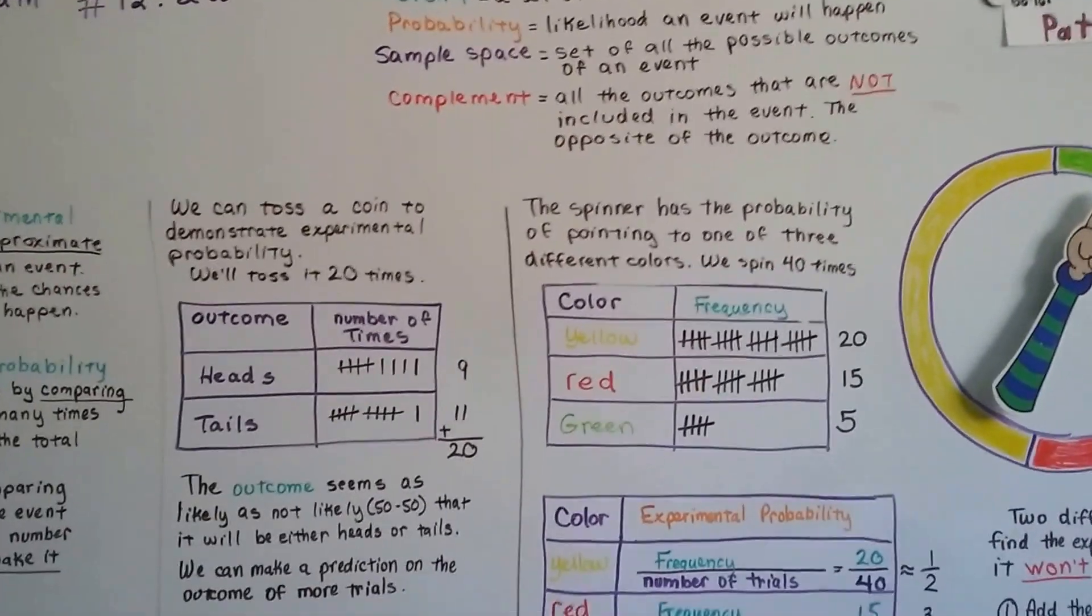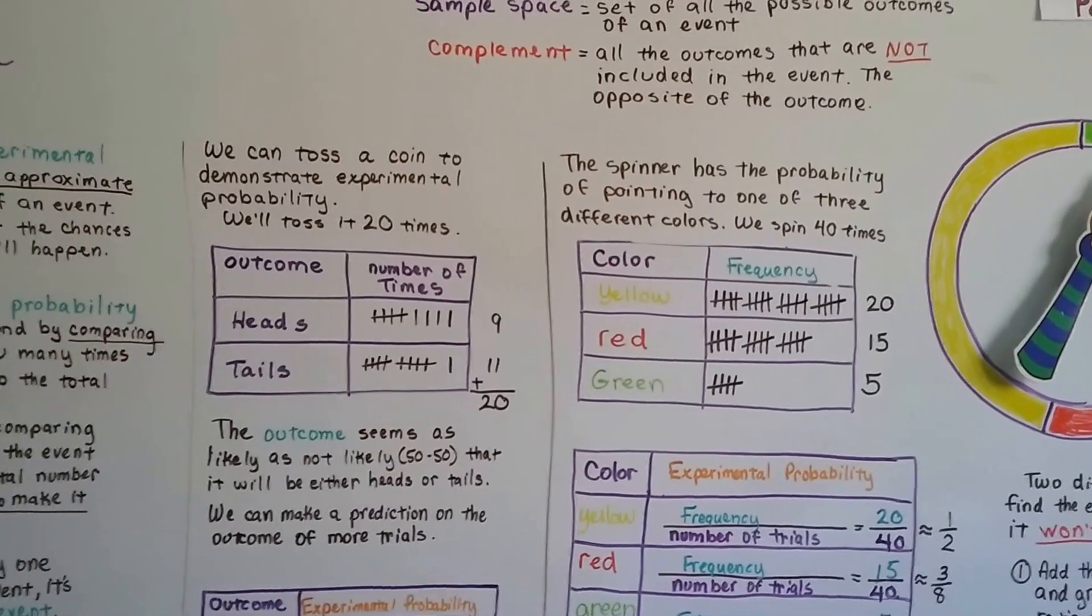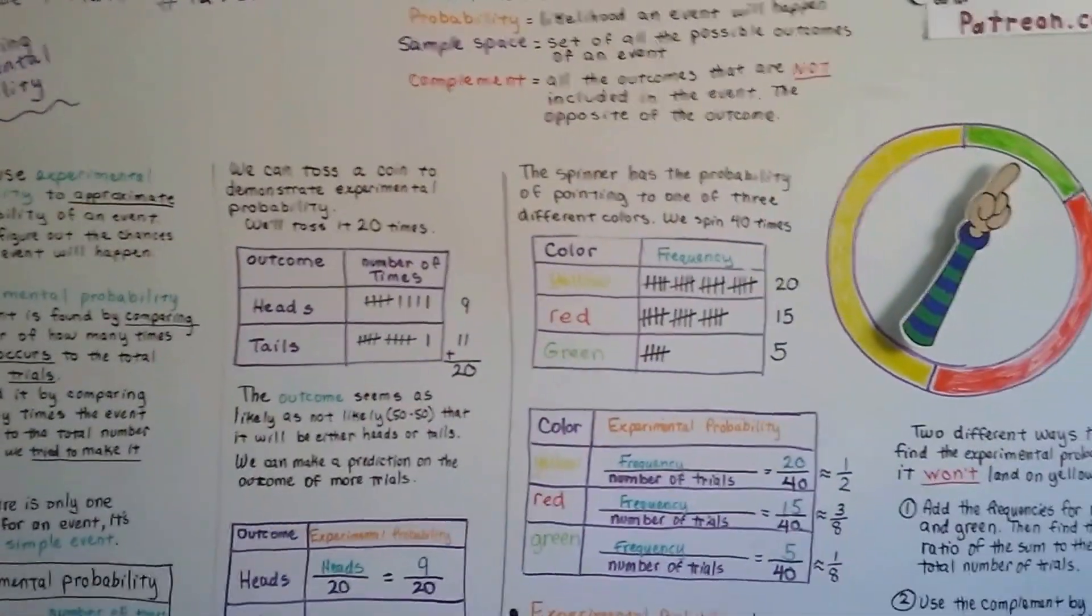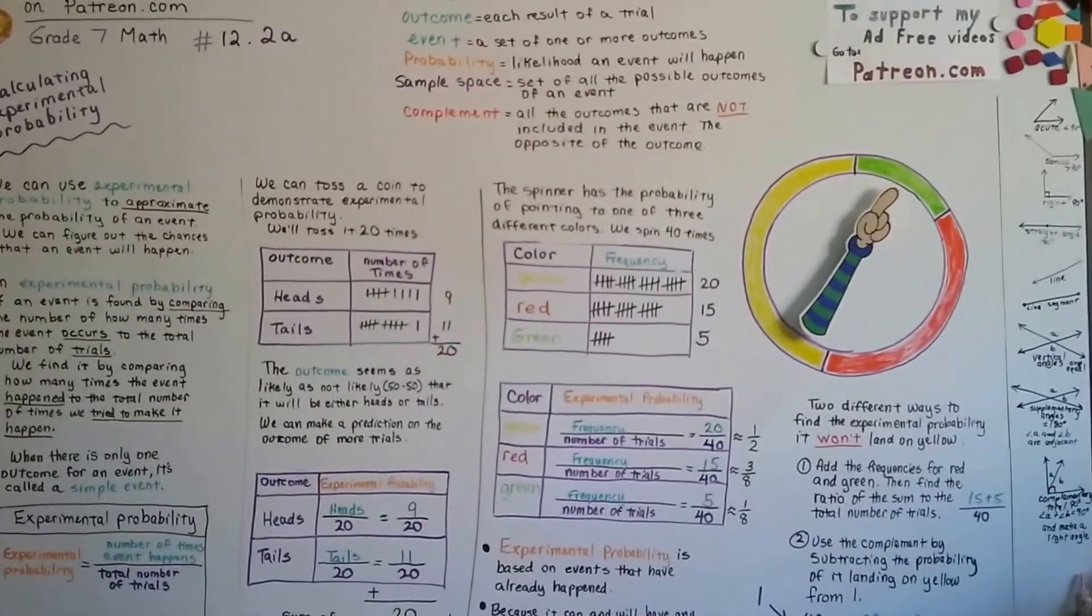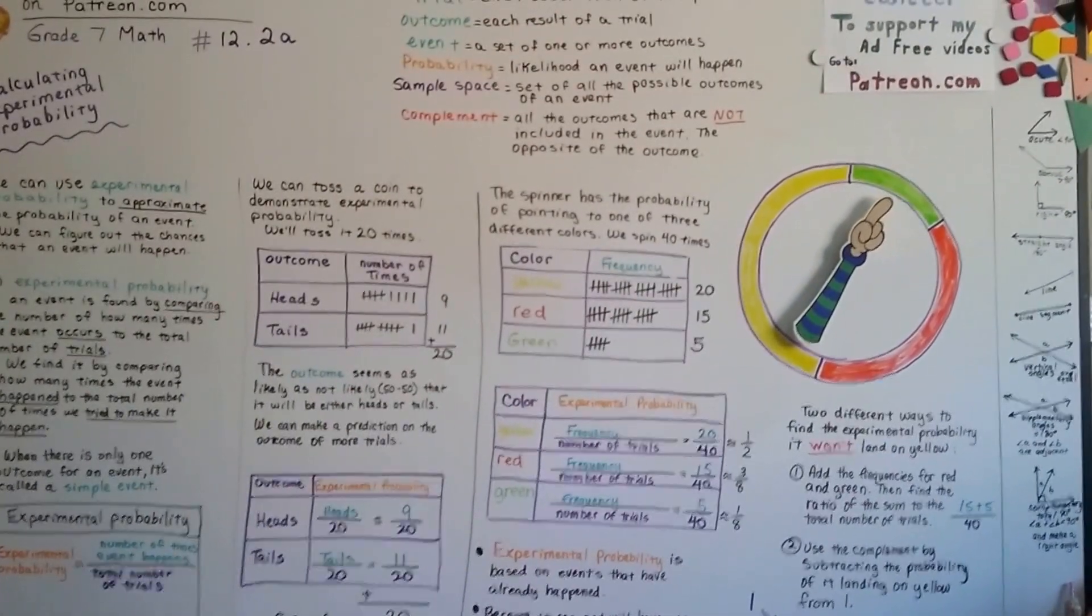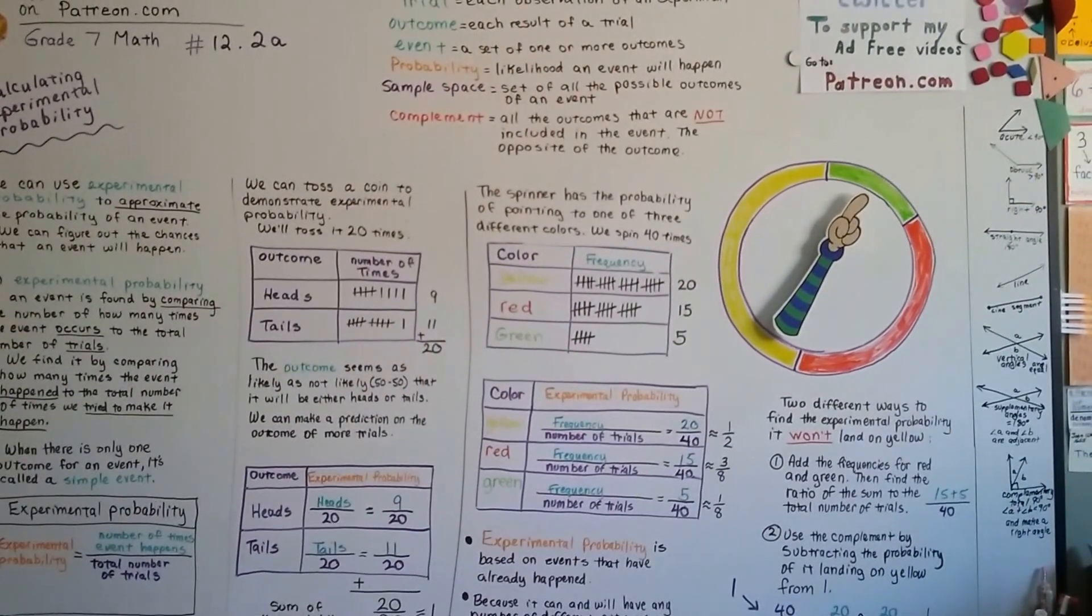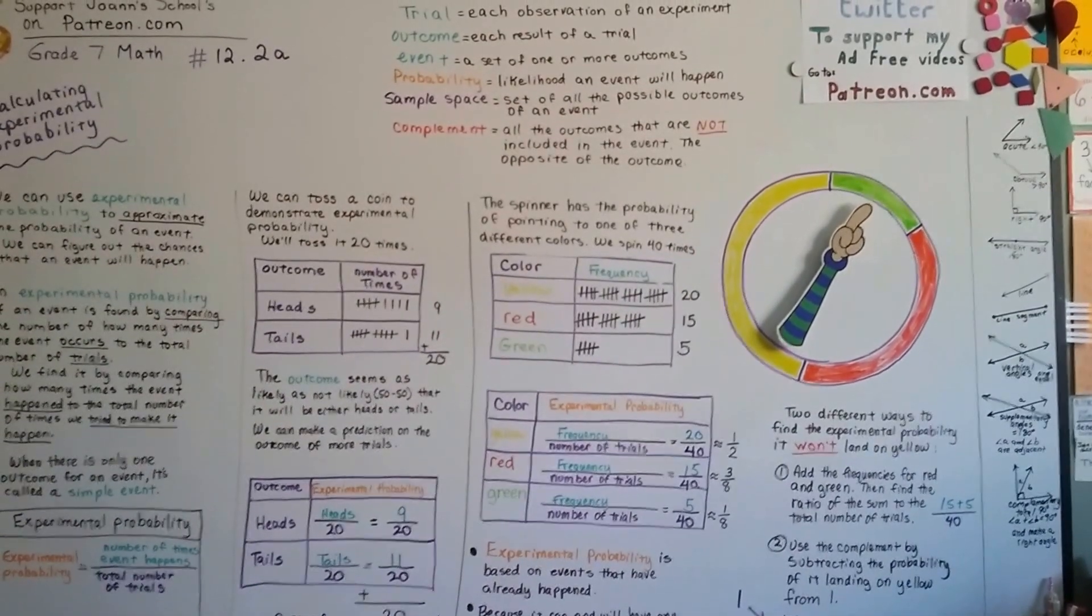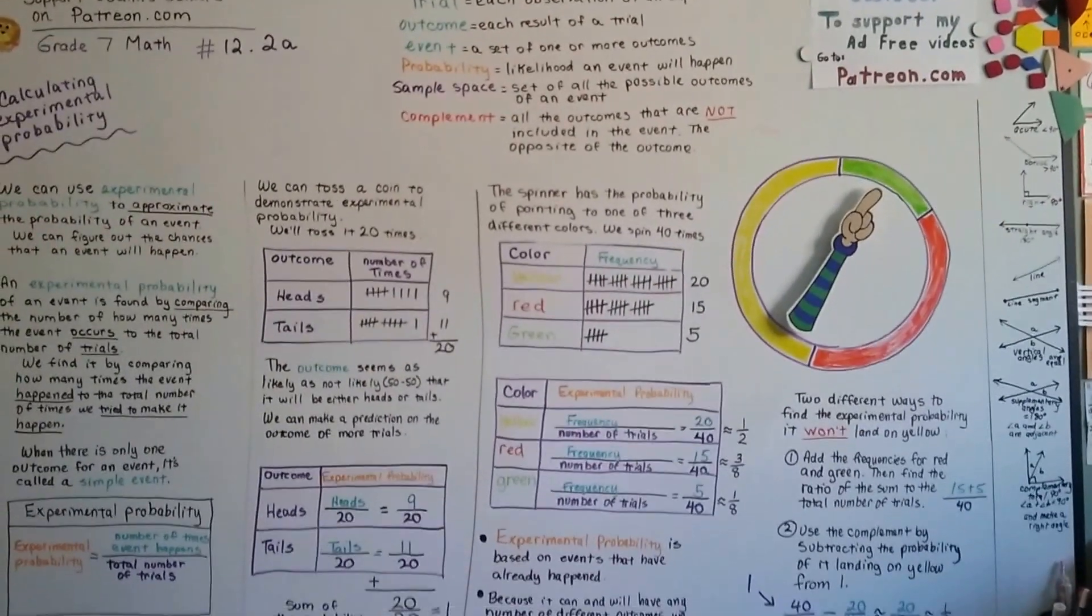Alright. Gosh, I hope I explained this well enough. We're going to talk about making predictions with experimental probability, and if you are confused at all in my sixth grade math list, I've got experimental probability. And you can see a couple of videos in there in the playlist for sixth grade. I'll see you next video.